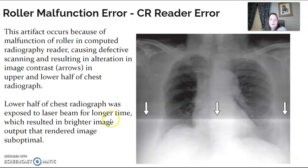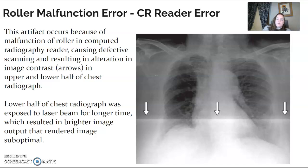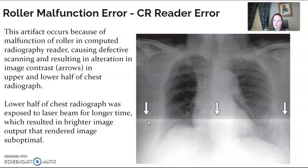Roller malfunction error. You can see this clear line — something happened within the rollers. With the CR plate, it takes the imaging plate through a set of rollers inside the CR processor. If there's a malfunction when it's scanning, it can be under the beam for a longer amount of time than it's supposed to be. This whole section ended up being a lot brighter, and the artifact was right through the area of anatomy, so it would most likely have to be repeated.